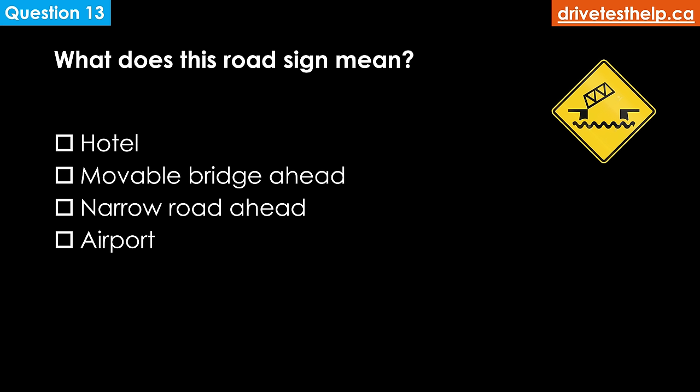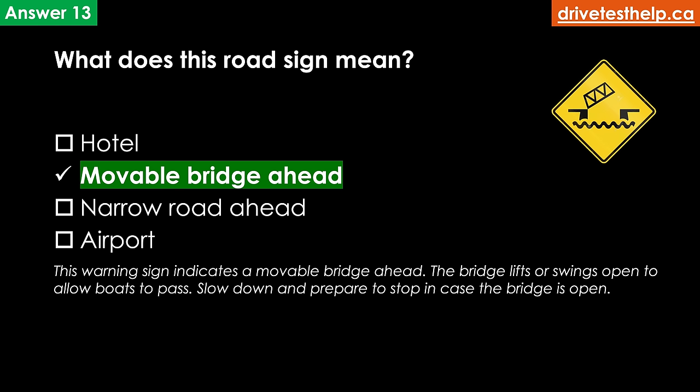What does this road sign mean? Options: hotel; movable bridge ahead; narrow road ahead; airport. The correct answer is movable bridge ahead. The bridge lifts or swings open to allow boats to pass. Slow down and prepare to stop in case the bridge is open.